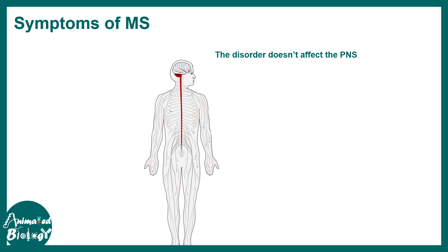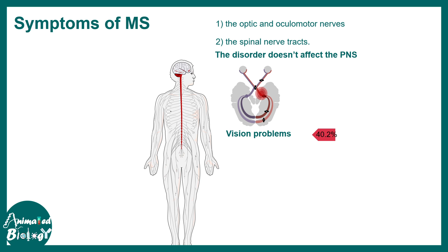Multiple sclerosis does not affect the peripheral nervous system. The key nerves affected are the optic and oculomotor nerves, and the spinal nerve tracts can also be significantly affected. The symptoms are quite variable and don't occur in all patients. Vision problems are very common, appearing in about 40% of patients, along with numbness, tingling, and walking difficulty.